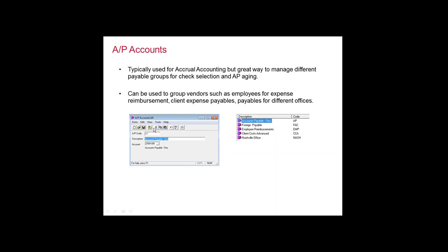Even if you are on a cash basis for AP, you can still create multiple AP accounts, and then you can use this setting or field to categorize and sort on reports as well as when you go into your selection. Under Tables in Juris, you're going to have an AP account. I've created several different AP accounts. How is this going to benefit me? Let's say that when I do a check, I only want to pull payables for firm operating expenses.